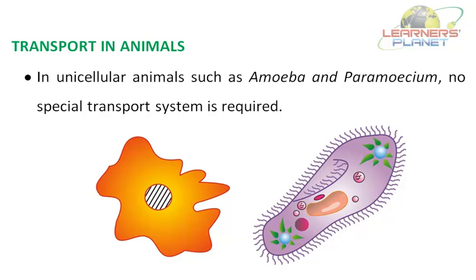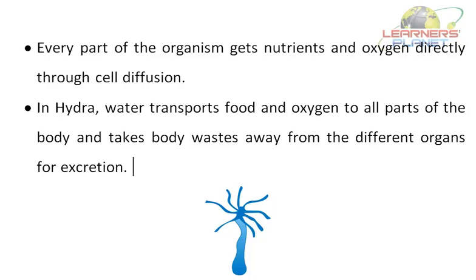In unicellular animals such as amoeba and paramecium, no specialized transport system is required. Here you can see a picture of an amoeba and paramecium. In these organisms, every part gets nutrients and oxygen directly through cell diffusion. You need to understand the definition of diffusion — it is the movement of molecules or gases from a region of higher concentration to a region of lower concentration.